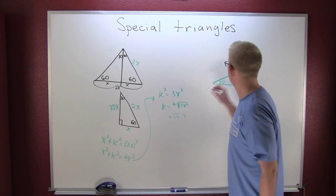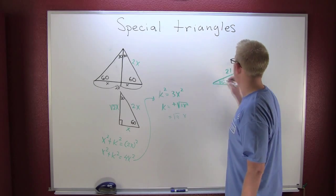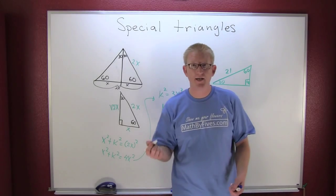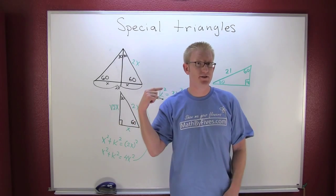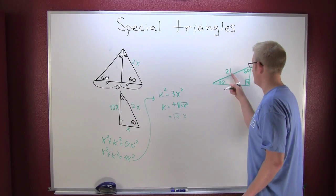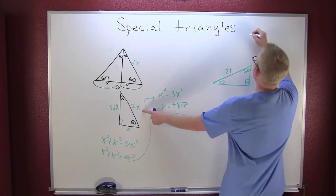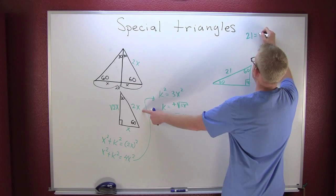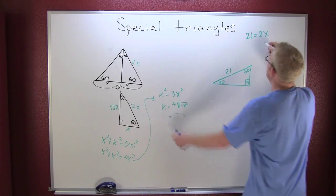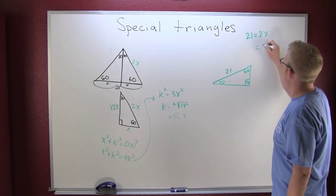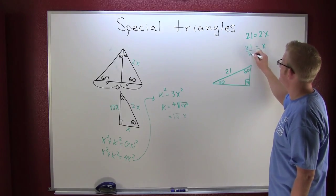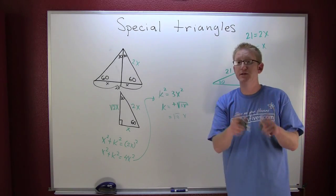The hypotenuse is 21, they want you to find the remaining sides. If the hypotenuse of a 30-60-90 triangle is 21, well we see here the hypotenuse is 2x, so I have 21 equals 2x, and then x going to be 21 halves.